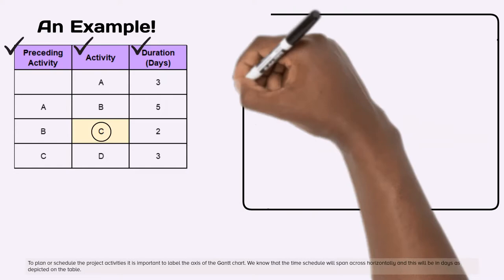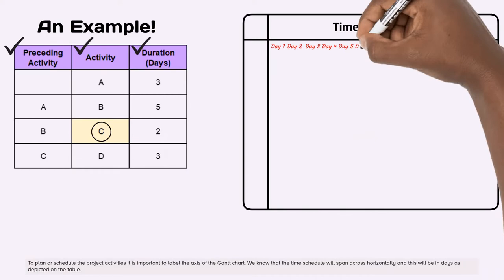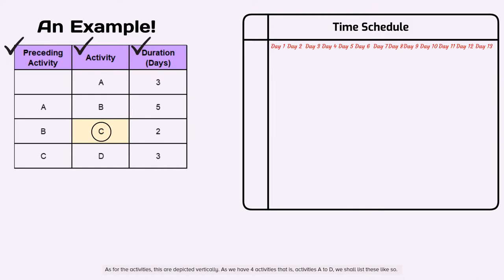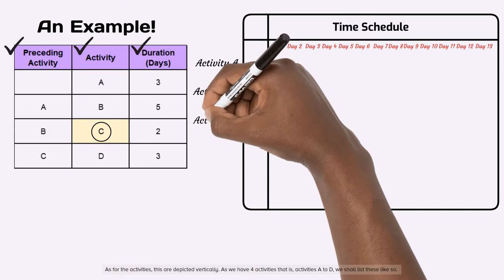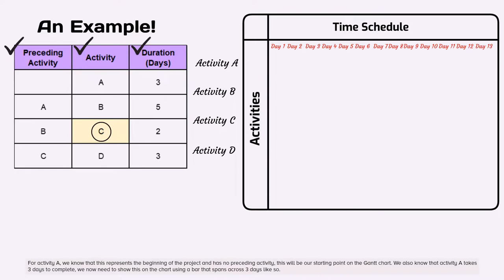To plan or schedule the project activities it is important to label the axis of the Gantt chart. We know that the time schedule will span across horizontally and this will be in days as depicted on the table. As for the activities, these are depicted vertically. As we have four activities that is, activities A to D, we shall list these like so.